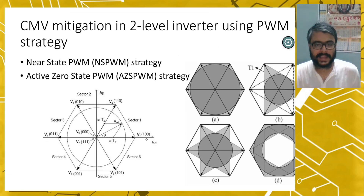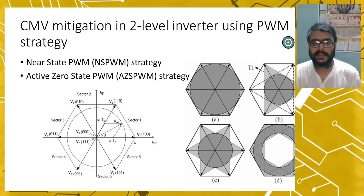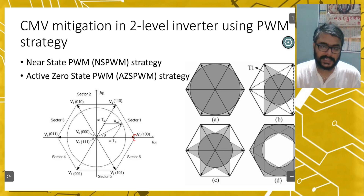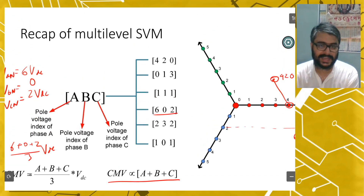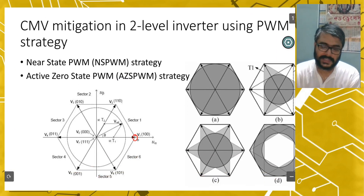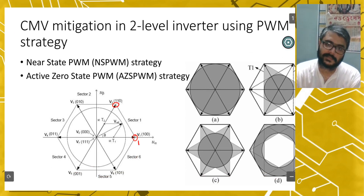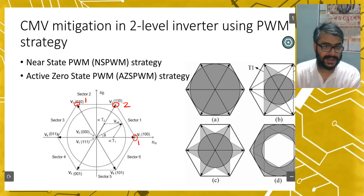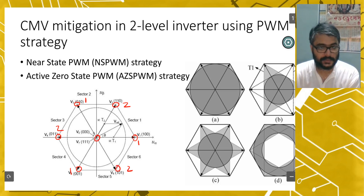This is common mode voltage mitigation in a two-level inverter using a PWM strategy. For example, the vector 1,0,0 has a CMV index of 1 plus 0 plus 0 equals 1. The vector 1,1,0 has a CMV index of 2. The vector 0,0,0 has a CMV index of 0, and the vector 1,1,1 has a CMV index of 3. So in conventional space vector modulation using one sector, the CMV varies from 0 to 3 in one switching cycle — a high variation in CMV.